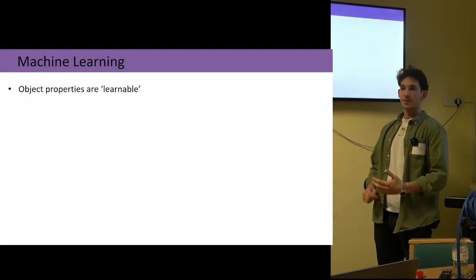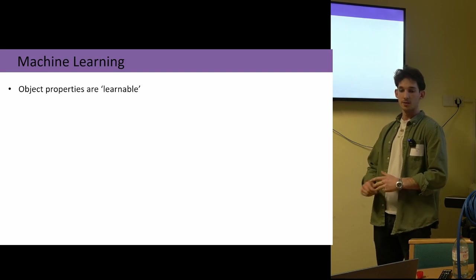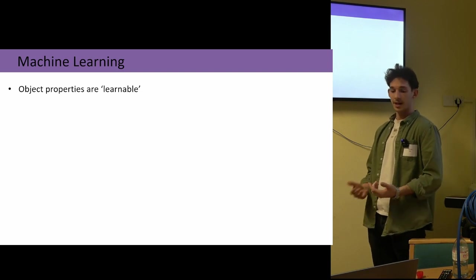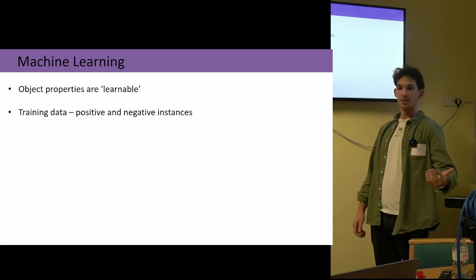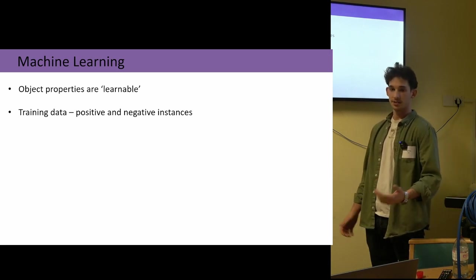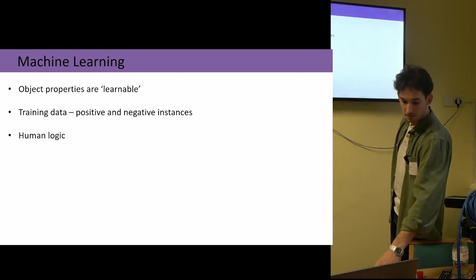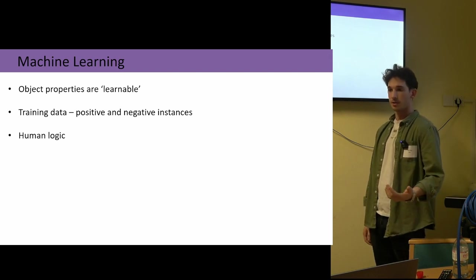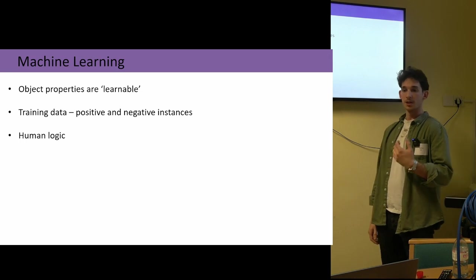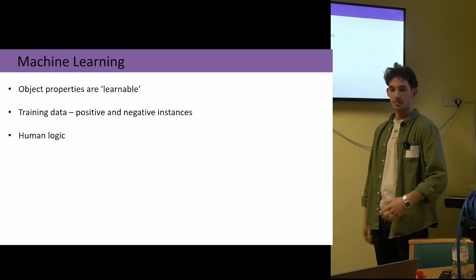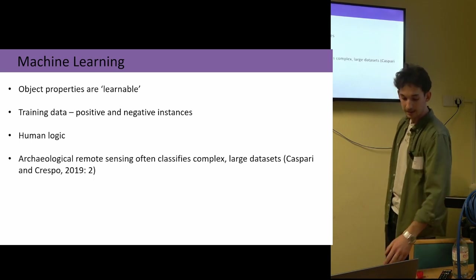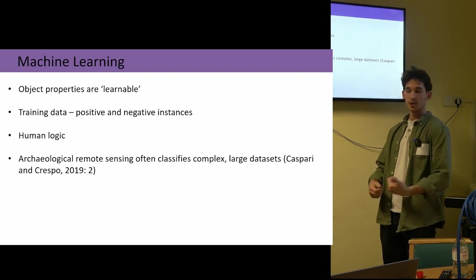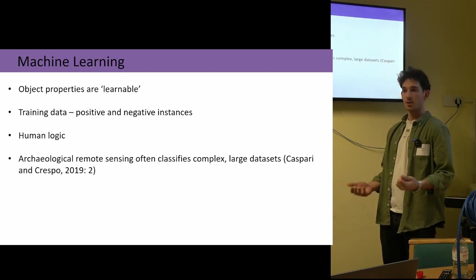So what makes machine learning different is that it does not explicitly rely on the need to know the exact characteristics of an object prior to its detection. Instead, these object properties are seen as learnable and teachable to a computer. This is done by providing the computer both positive and sometimes negative instances of an object class, and it's able to learn its characteristics. By doing so, these methods are attempting to reproduce the same logic we humans use when we look at and identify an object in an image based on our prior experience. The crucial thing here is that the machine learning algorithms are able to continually improve their detections over time through more training data. And we're seeing an increased use in these applications, particularly in archaeological remote sensing, because machine learning is really adept at classifying large and really complex datasets.